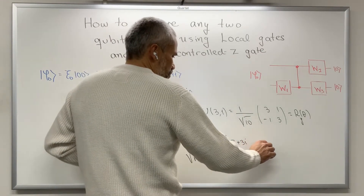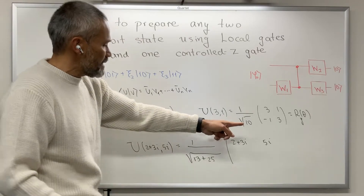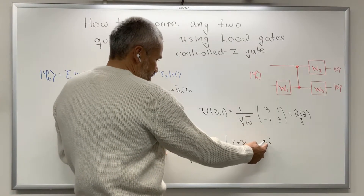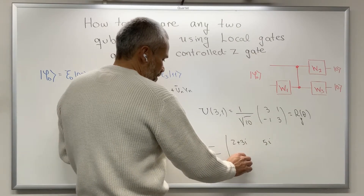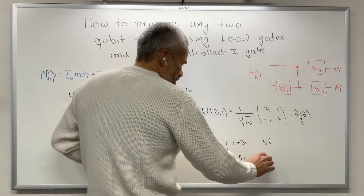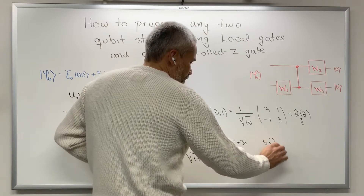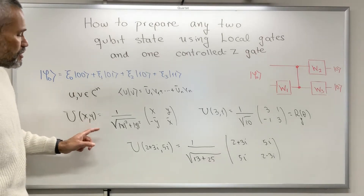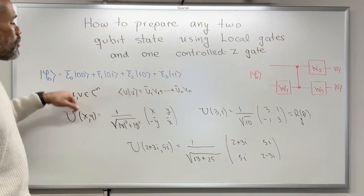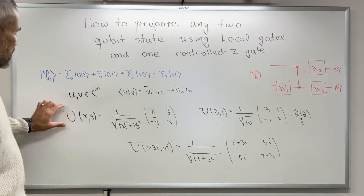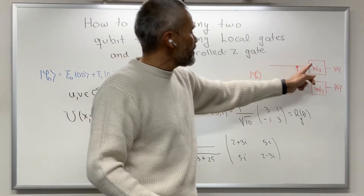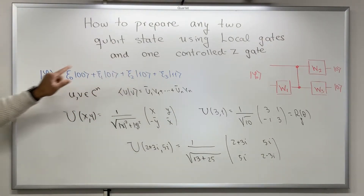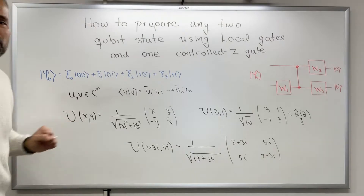The matrix entries are [2+3i, 5i; 5i, 2−3i], since the conjugate of 5i is −5i (negated gives 5i) and the conjugate of 2+3i is 2−3i. It is easy to check that for any x and y different from (0, 0) we get a unitary matrix. We will use this notation to provide W1, W2, and W3 explicitly in terms of the amplitudes of the two-qubit state we want to prepare.